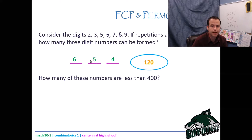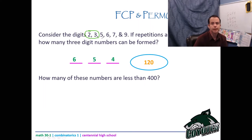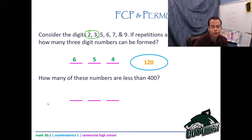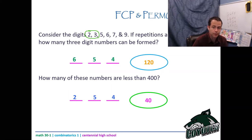How many of these numbers are less than 400? You always deal with restrictions first. If I want a number less than 400, the front digit can only be two or three — if it were five I'd get 500-something, which isn't less than 400. So only two options for the first digit. I've used a digit, leaving five options for the second and four for the last: 2×5×4 = 40 numbers less than 400.